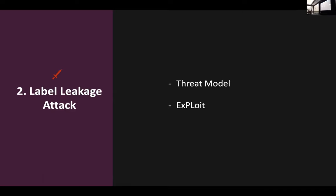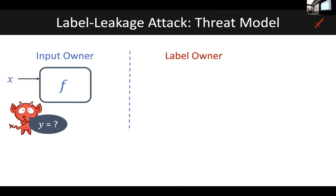I'll first present the threat model of our label leakage attack. Our threat model involves an honest-but-curious adversary. The adversary in our case is the input owner, whose goal is to try and leak the private labels Y — that is, for each input X, the input owner would like to know the corresponding private labels. During the forward pass, the input owner takes input X, produces embedding Z, and shares it. In return, during the backward pass, the input owner gets the gradient of the loss with respect to Z. Everything else on the label owner's side is unknown.